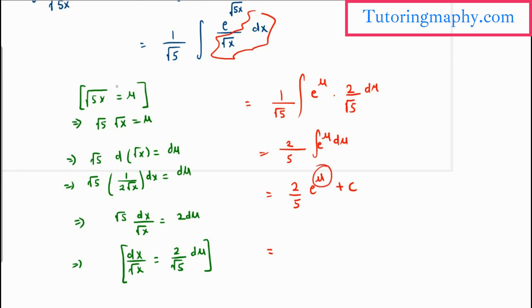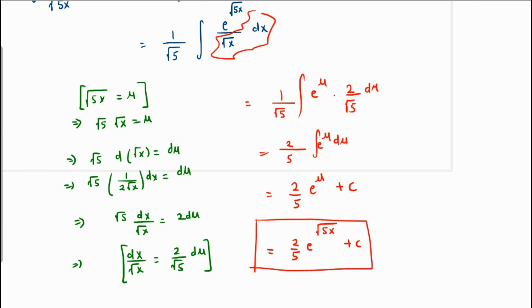Remember, don't leave your answer in terms of u, because u is our substituted variable, but the original variable is x. Let's resubstitute u in terms of x. The answer will be 2 over 5 times e raised to root of 5x plus c. This is the final answer.